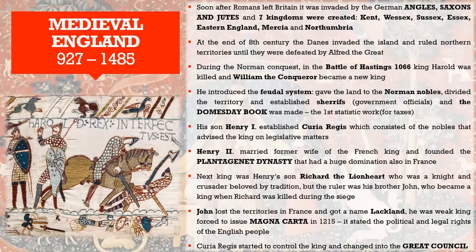They created these kingdoms and everything was quite peaceful, but at the end of the eighth century the Danes invaded the island. They ruled the northern territories until they were defeated by Alfred the Great. The Danes are basically the Vikings, originally from Denmark. These people were defeated by Alfred the Great, which is important for the chronology.